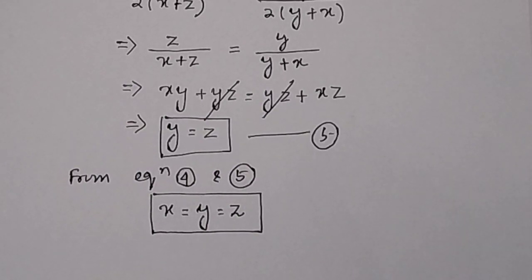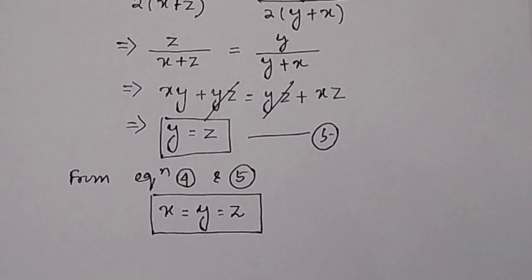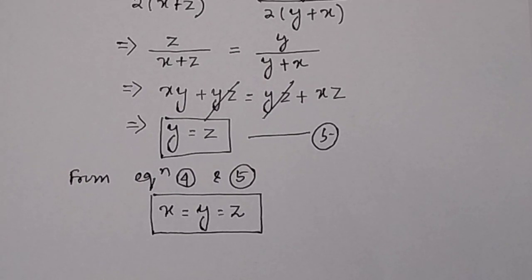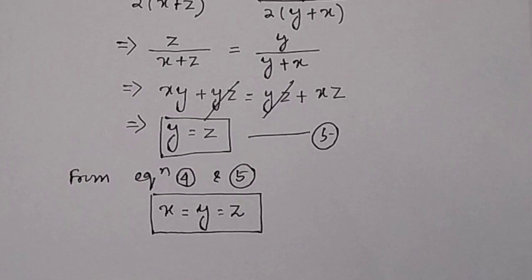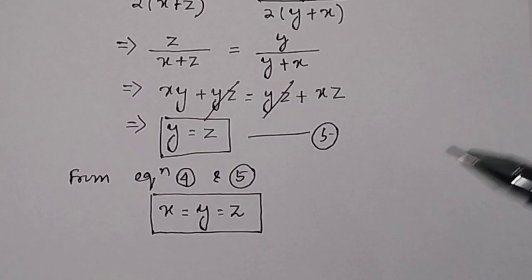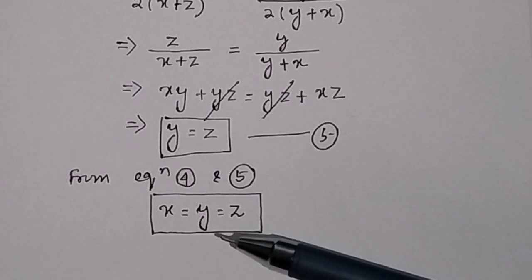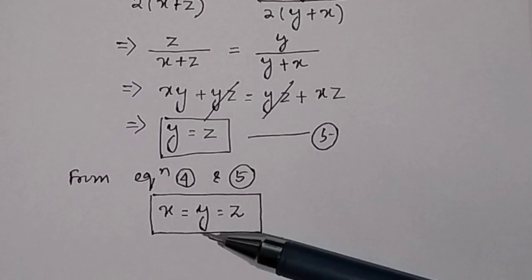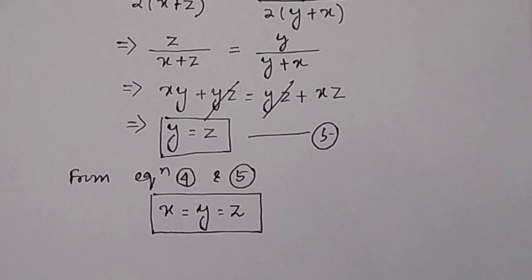So, if a rectangular box has maximum capacity and the surface area is given, we have proved that the length will be equal to the breadth, which will be equal to the height: x = y = z.